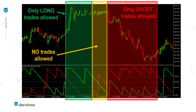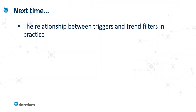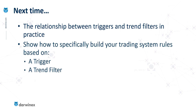But if we've done this right, we've turned the probabilities in our favour and we'll now have a much better system. In the next episode, we will start to integrate the rules between our triggers and our trend filter in order to specifically build a trading system based on those two factors.